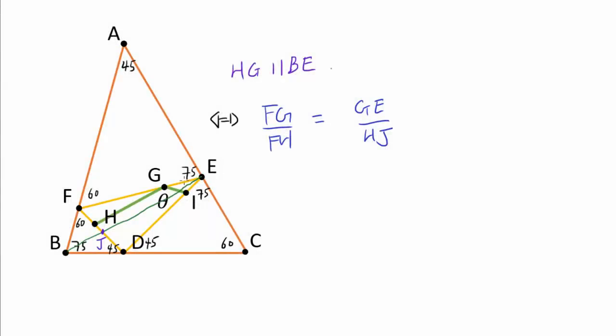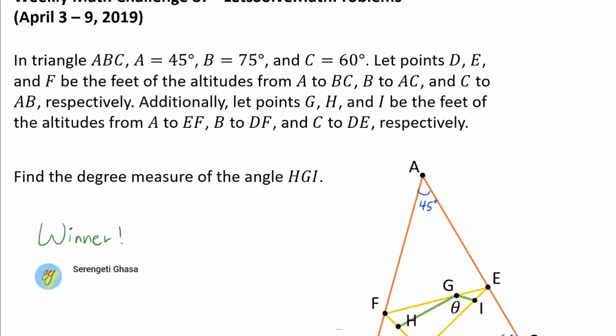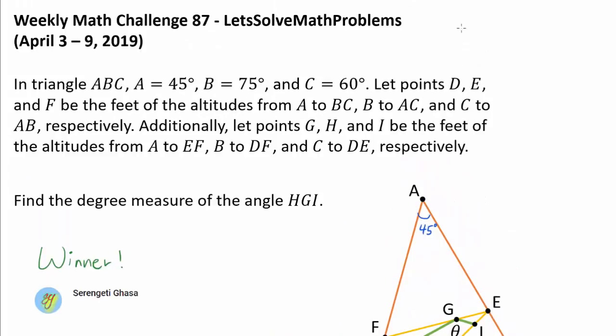So since we know GEB, this angle is 15 degrees, we know this angle is also 15 degrees. And since EGI we have shown is 30 degrees, that's telling us that our desired angle HGI is 180 minus 15 minus 30. Also known as 135 degrees. So let's go all the way back up. Our final answer to this question is 135 degrees.